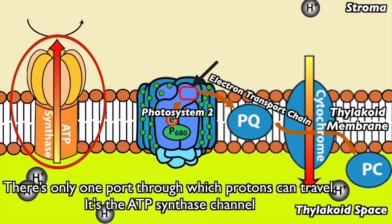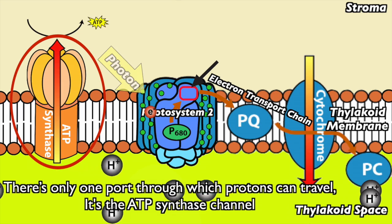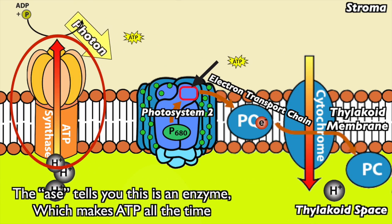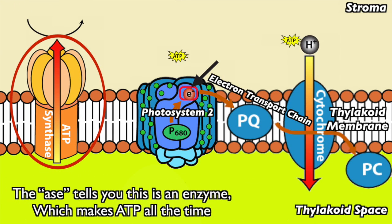There's only one port through which protons can travel. It's the ATP synthase channel. The name tells you this is an enzyme, which makes ATP all the time.